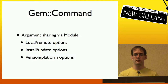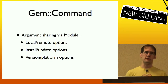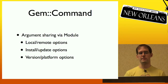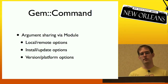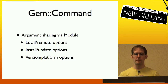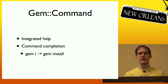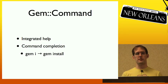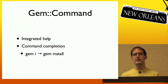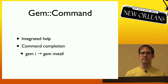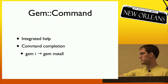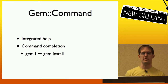It also provides argument sharing via modules. So we've got a module for local and remote options, one for install and update options, and one for version and platform options. You can also only include the ones you want. And finally, there's integrated help — gem help will list all the commands that are active. And I think the niftiest feature is command completion: since there's only one command that starts with 'i', you can type 'gem i' to install gems instead of 'gem install'.